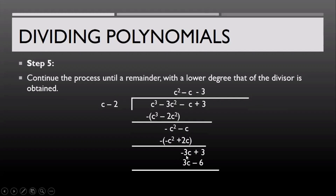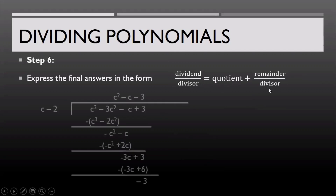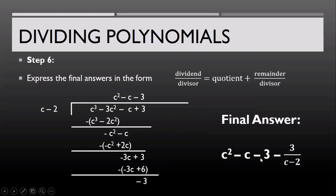Proceeding with the algebraic addition: negative 3c plus 3c gives 0, and positive 3 plus negative 6 gives negative 3. Since there is nothing left in the dividend to be brought down, negative 3 is the remainder. The last step is to express the final answer in the form: quotient plus the remainder over the divisor. So that gives us c squared minus c minus 3 minus 3 over c minus 2. We used subtraction here because we have a negative remainder. That's how you do the long division method of dividing a polynomial by a polynomial.